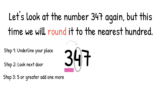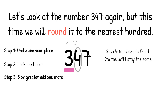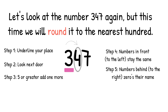If that digit is 5 or greater, we add one more to the place that we're rounding. Since the digit in the tens column is a 4, it is not 5 or greater, so the digit in the hundreds column is going to stay the same. Since there are no numbers to the left of the hundreds column, we skip step 4. Step 5: the numbers to the right of the digit that we are rounding turn into zeros. So 347 rounded to the nearest hundred is 300.